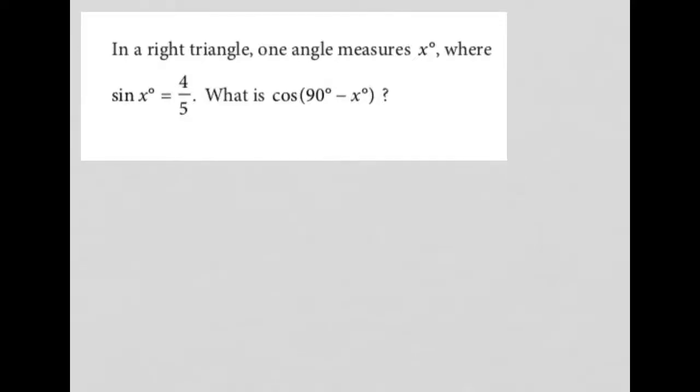So this question says, in a right triangle, one angle measures x degrees where sine of x degrees is equal to 4 over 5. What is cosine of 90 degrees minus x degrees?